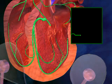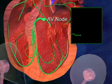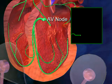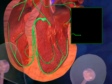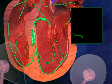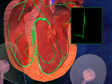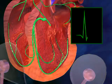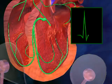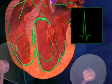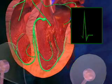The electrical signal also passes into the ventricles via the AV node and then travels down the tissue that separates these two lower chambers. Finally, the signal travels back up the ventricles, which contract and pump blood to the lungs and body.